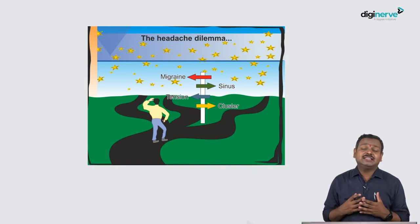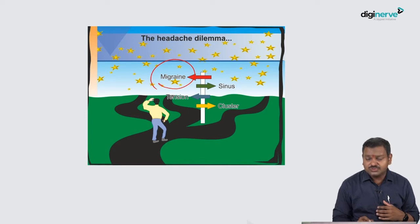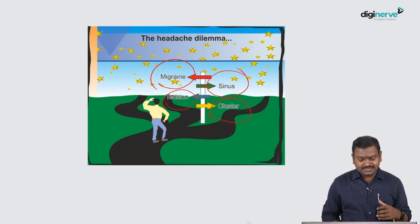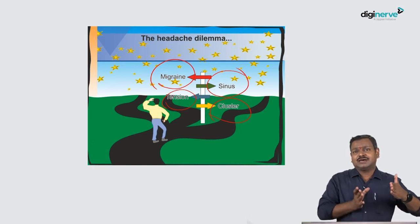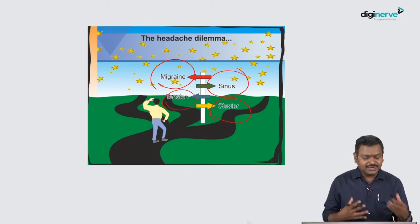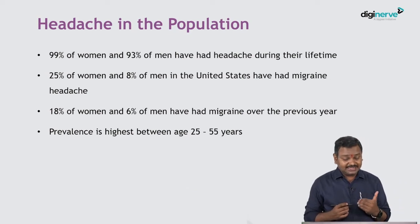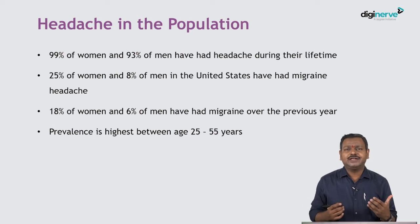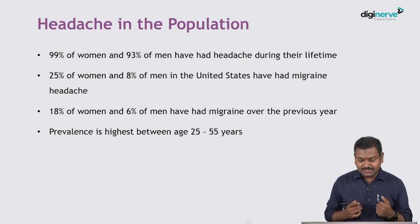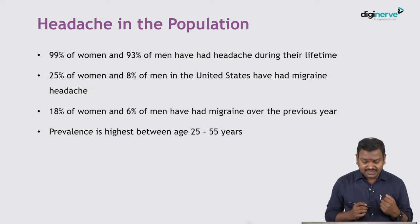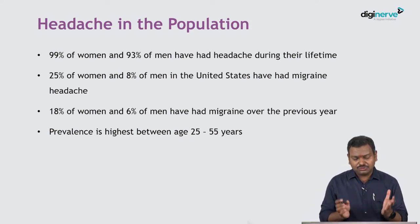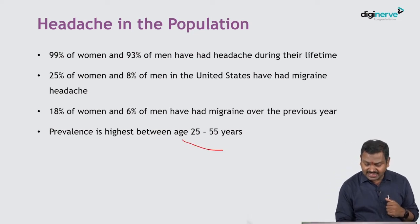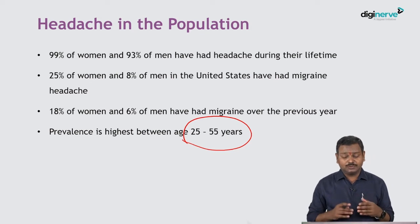When a patient comes with headache the dilemma is: what is the cause? Migraine is by far the most common cause of primary headaches; you could also have tension headaches and cluster headaches, or upper respiratory sinus infections. 99% of women and 93% of men have headaches during their life. Headache is the most common presenting symptom to any OPD. 25% of women and 8% of men in the United States have migraine, with the highest prevalence between ages 25 to 55 years.